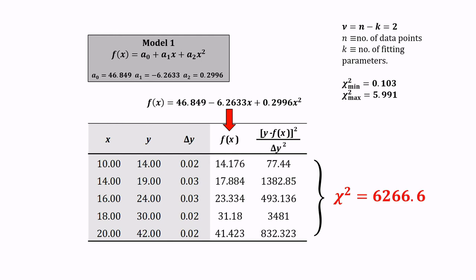Therefore, the calculated value of chi squared lies outside of the range between the critical values. So, we conclude that model 1 is not a good fit.